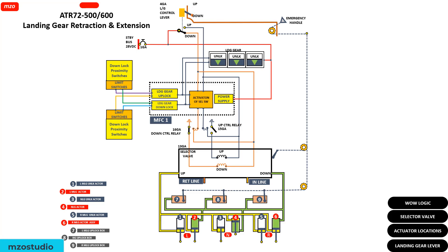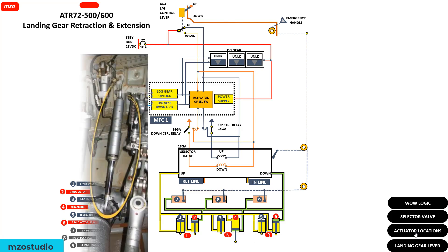Here is the left main landing gear actuator, this is the right main landing gear actuator, and this is the nose landing gear actuator. This actuator for the gear is in the opposite direction — this is the unlock actuator.